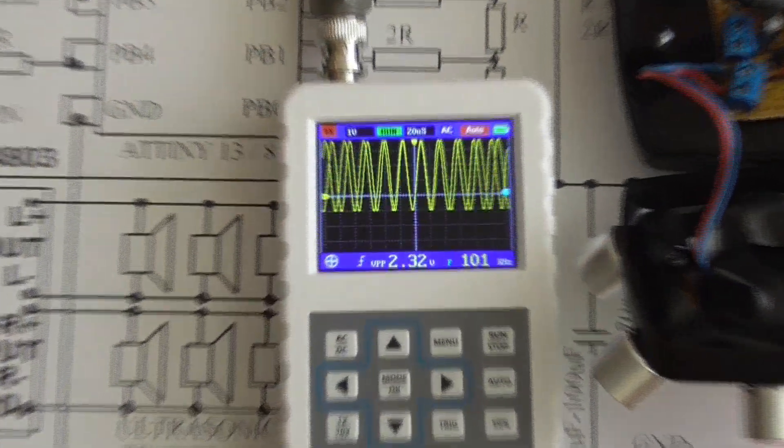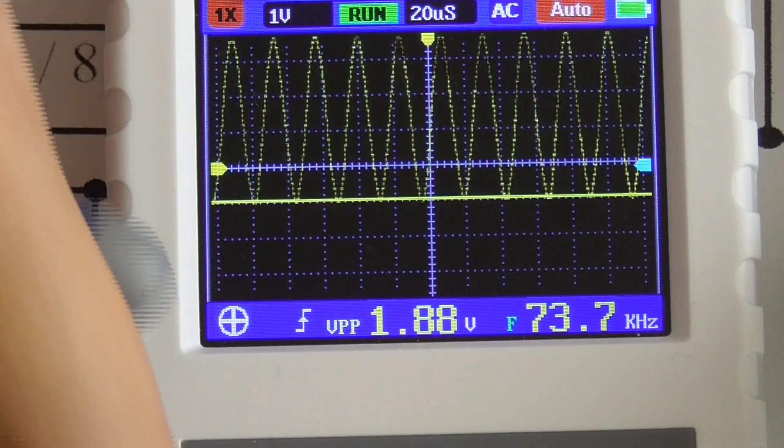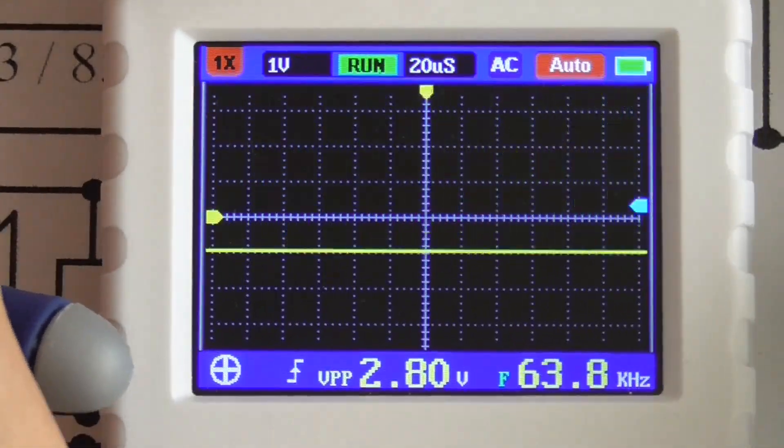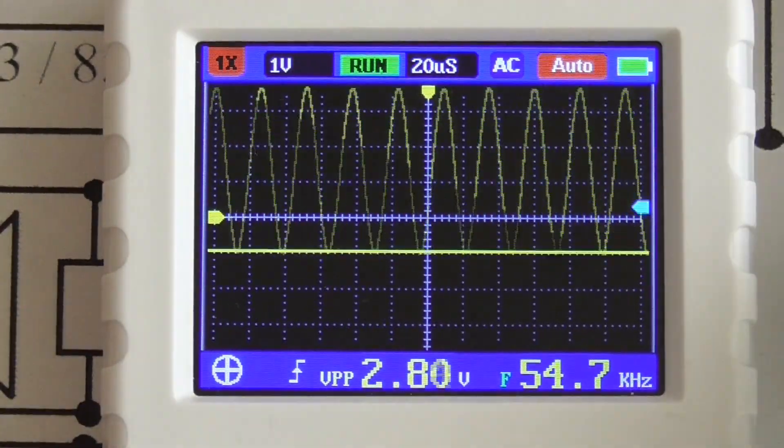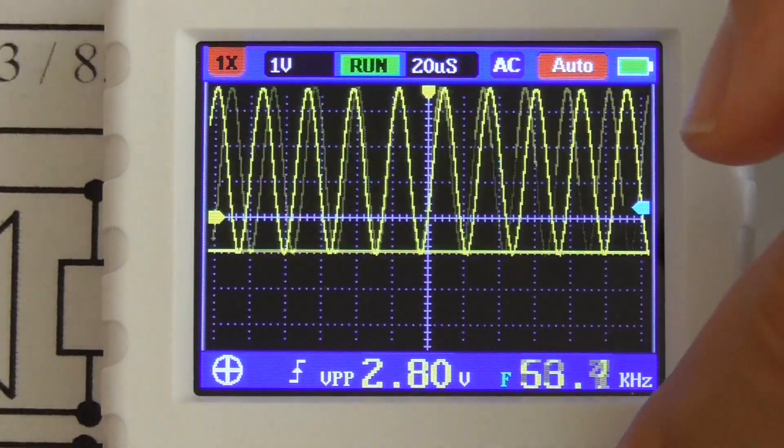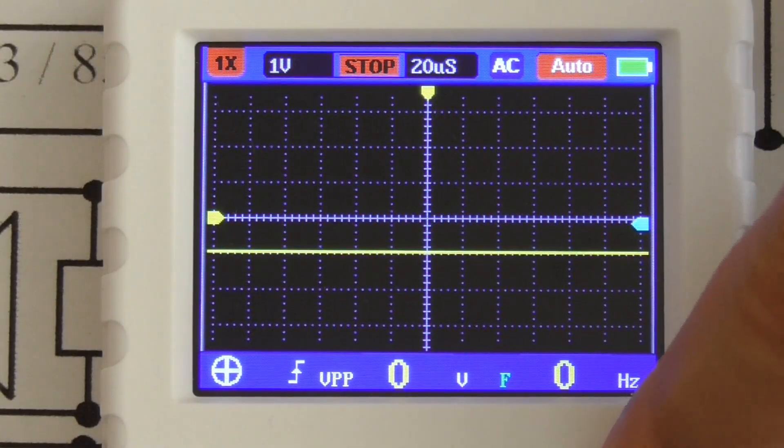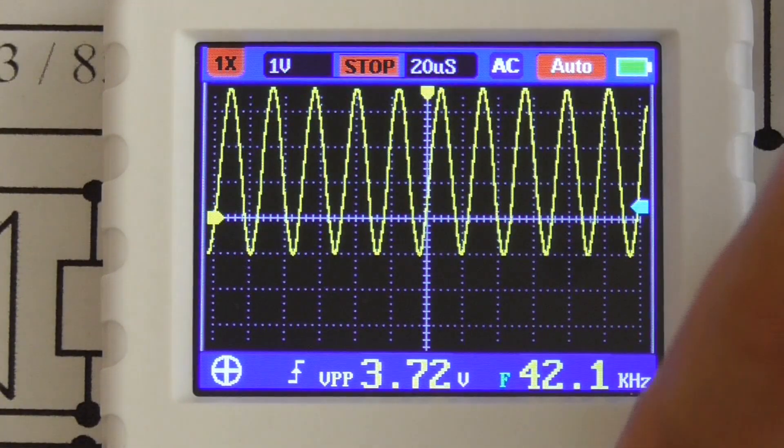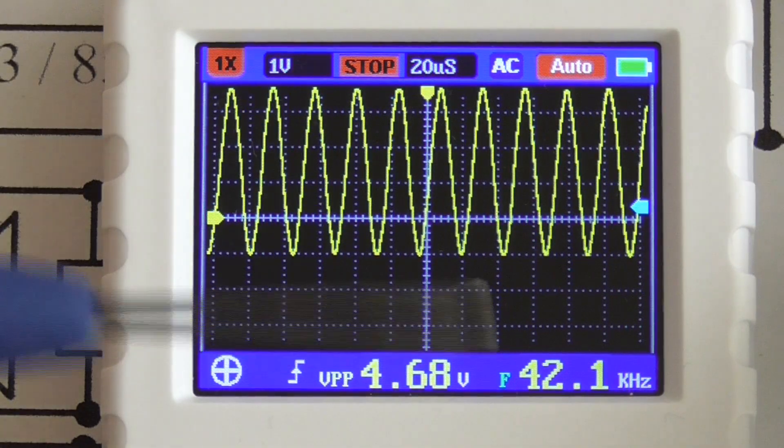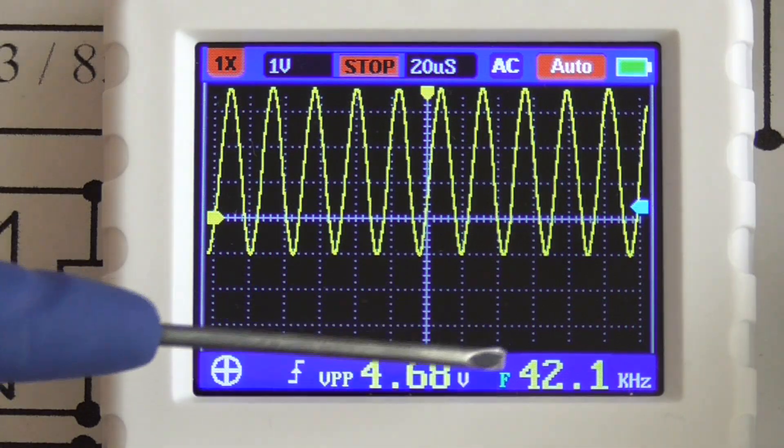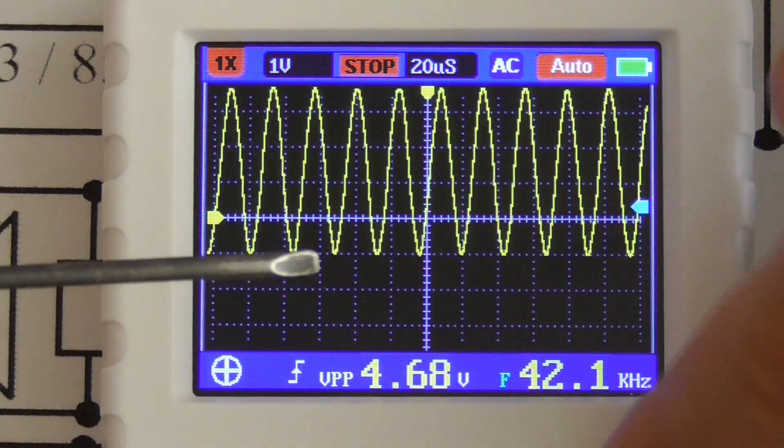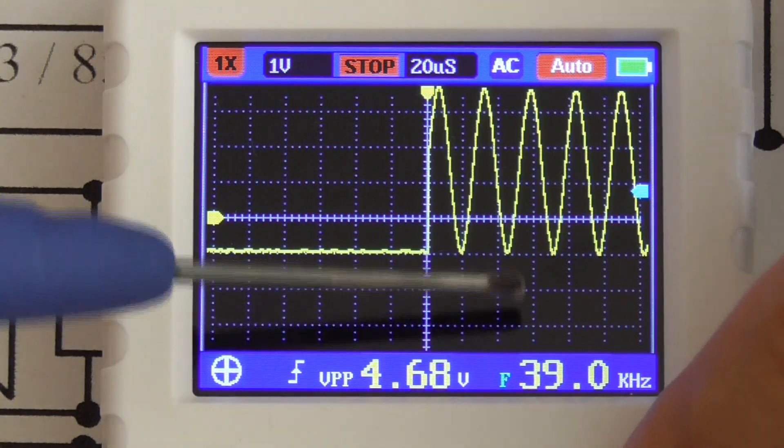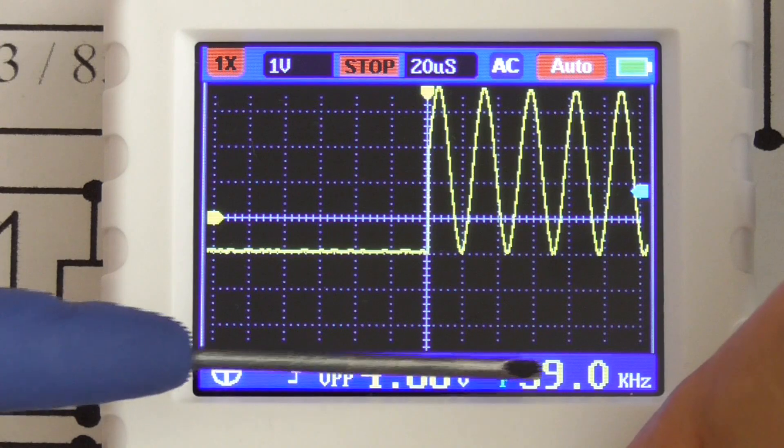Okay, now it should be visible. So if I press the stop button and try to catch, you will see that there are two frequencies, actually. One is 42 kilohertz, and the second one is something like 39 kilohertz frequency.